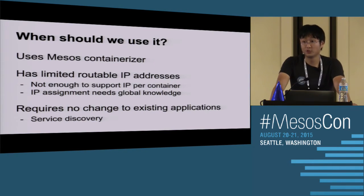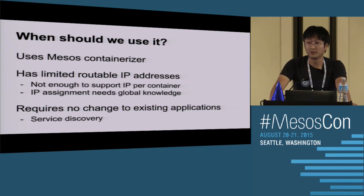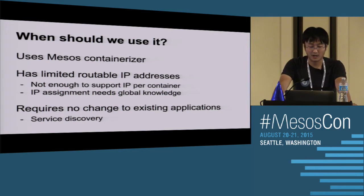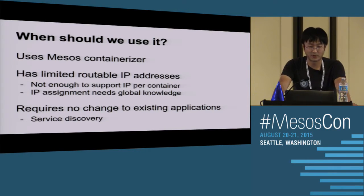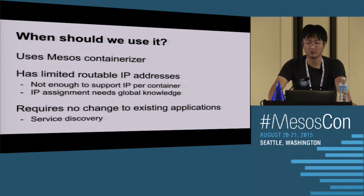We have solutions to address those problems, but the question is when should you use this isolator. It's only for the MESOS containerizer. You should use it if you do not have enough routable IPs in your data center to support IP-per-container. Or even if you have enough IPs, the assignment needs to talk to some global services requiring global knowledge - and MESOS doesn't currently support a notion of global resources. Also if you have requirements like not wanting to change your service discovery mechanism.